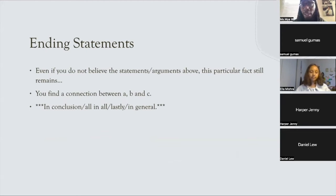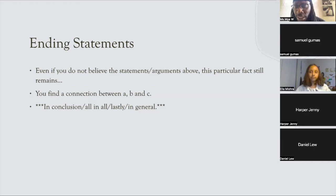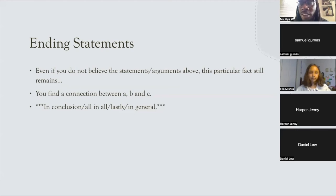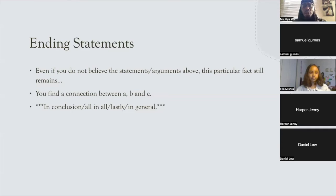Even if you don't believe the arguments made above, this fact still remains. Give an overview reminding the judge of the connection between A, B, and C — your first argument, second argument, your uniqueness, link, and impact. In conclusion, judge: I had my uniqueness, my link, my impact. If you're running a K, you know your parts. If you're doing topicality, your 'A' is your definition. That organization will help you be organized within your speeches as they relate to the flow.